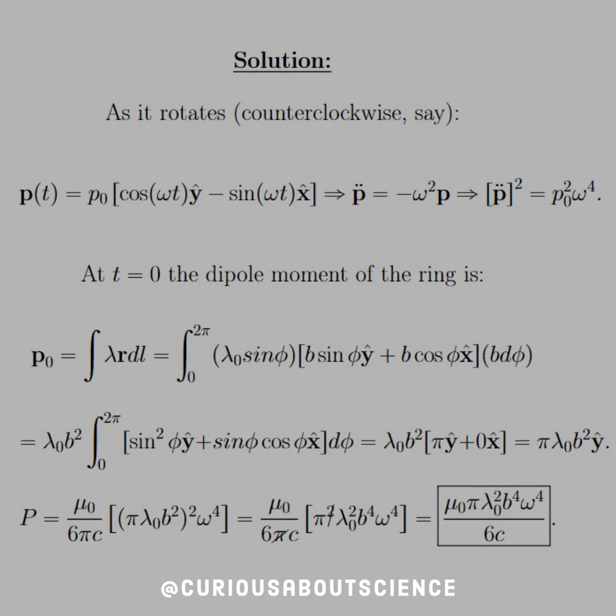Now, λ = λ₀ sin φ. But our radius was dependent on the parameterization for x and y specifically. So that's where we get b sin φ ŷ plus b cos φ x̂. Again, just the normal stuff we see in the xy plane.